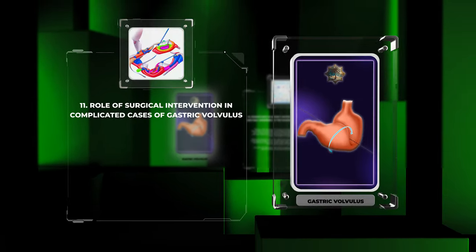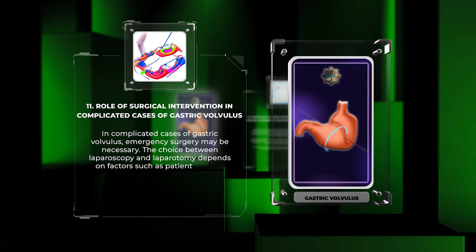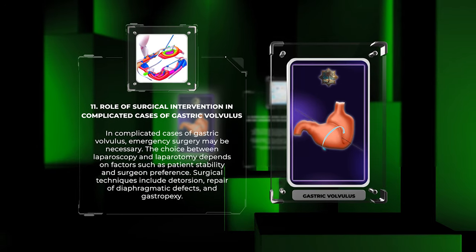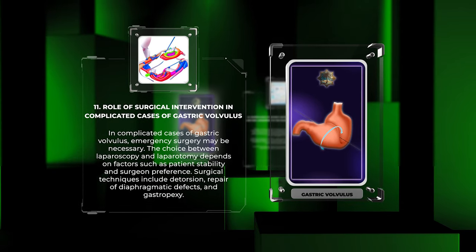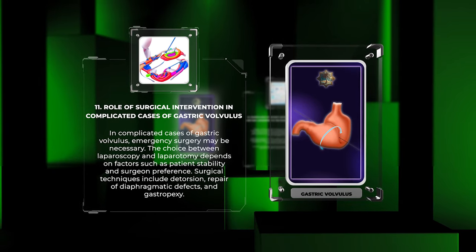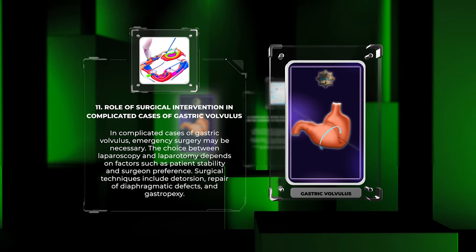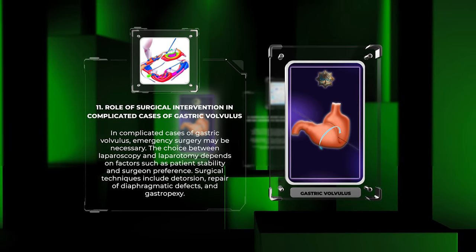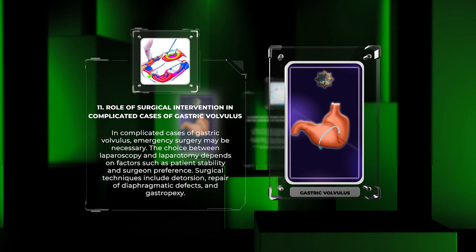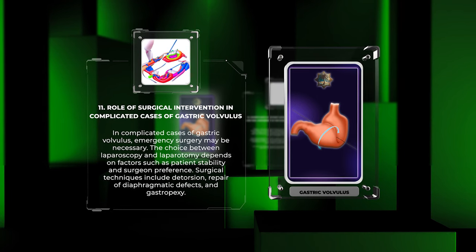In complicated cases of gastric volvulus, emergency surgery may be necessary. The choice between laparoscopy and laparotomy depends on factors such as patient stability and surgeon preference. Surgical techniques include detortion, repair of diaphragmatic defects, and gastropexy.